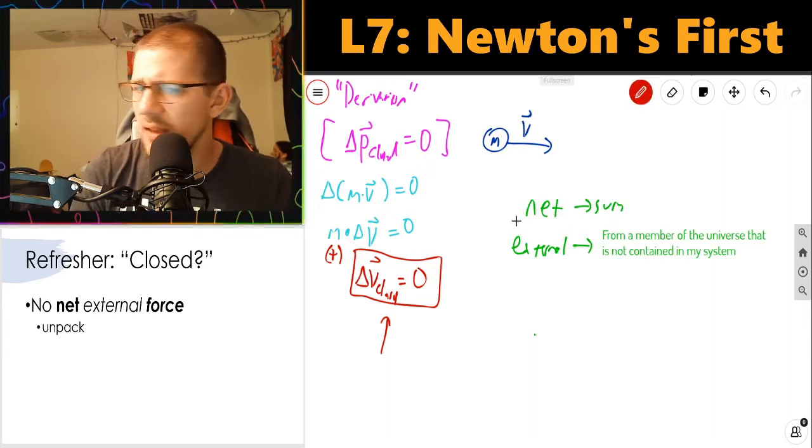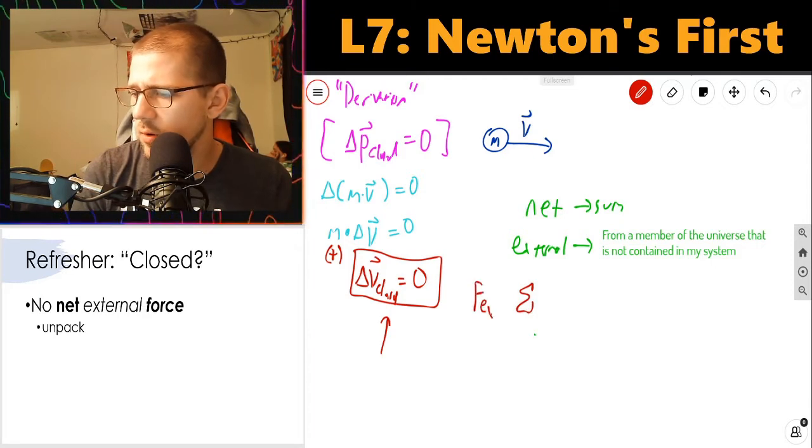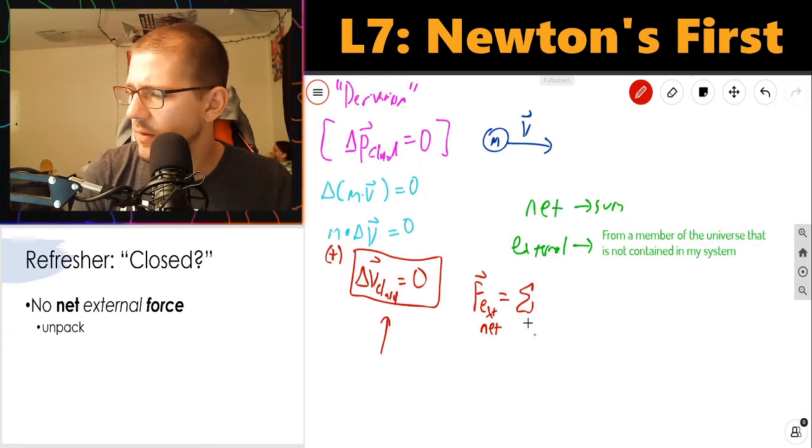The external force is a vector sum. F_external,net is the sum of all of the external forces on my system combined.